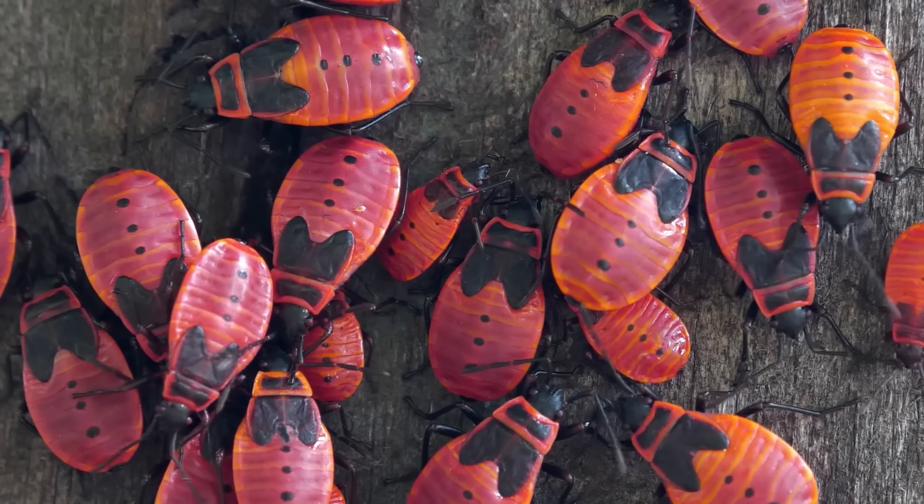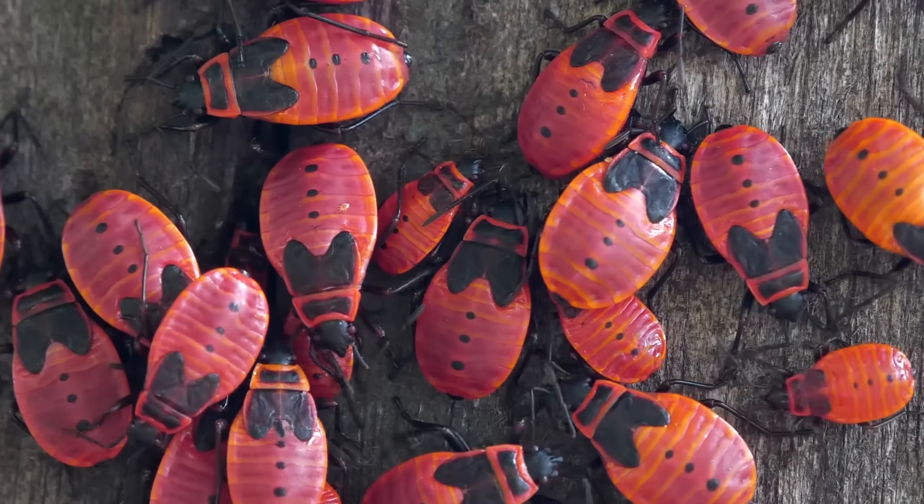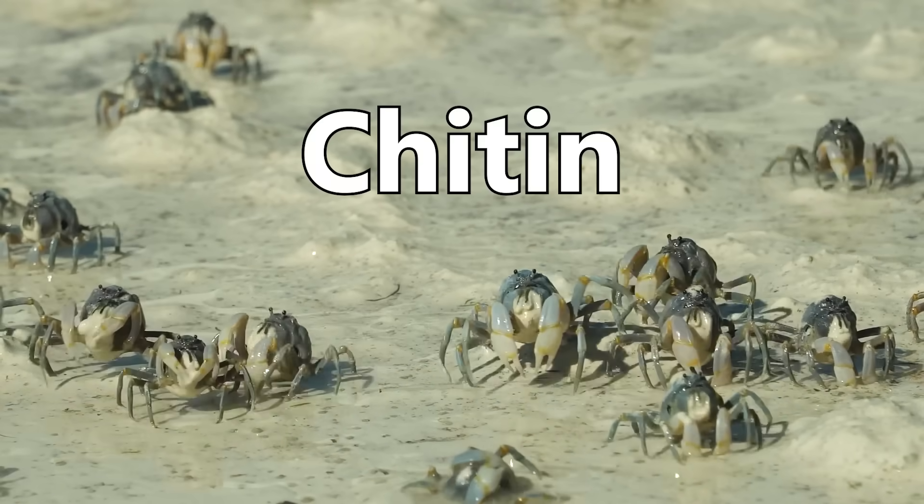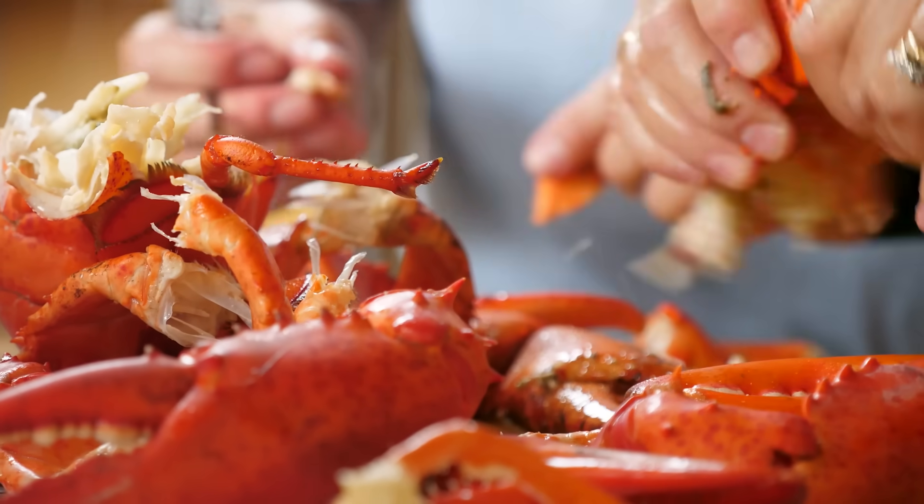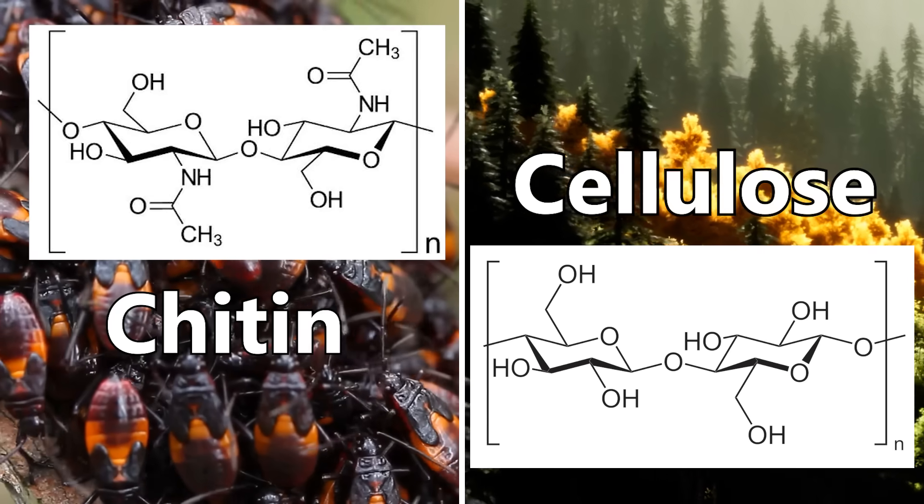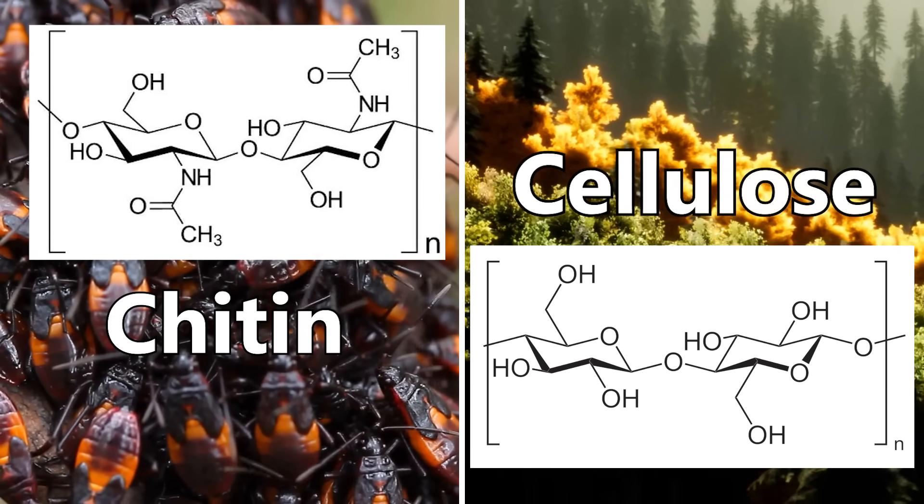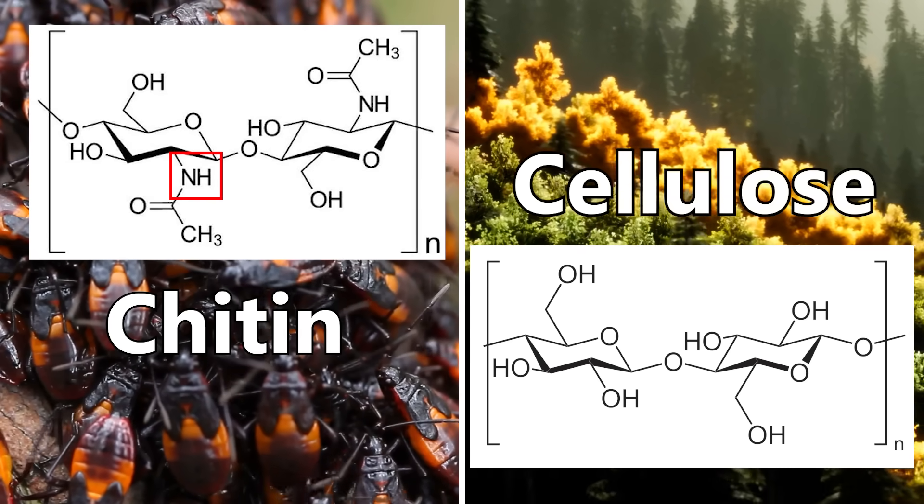You see, shrimp shells, and the shells of most bugs and creepy crawlies, marine or otherwise, are made primarily of a polymer called chitin. Chitin is basically meat's attempt at making cellulose. It's made of a long chain of sugar molecules, but notably, unlike cellulose, it has this amine group hanging off the side of the chain.